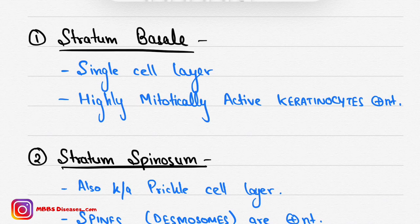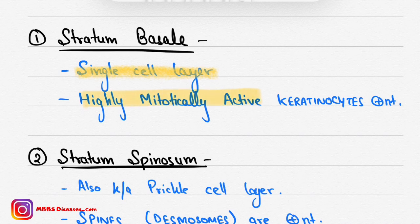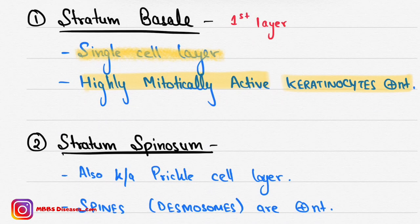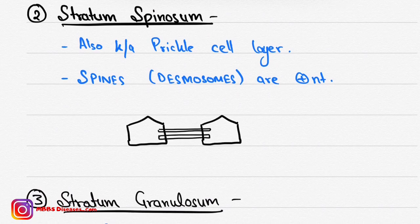The first layer is stratum basale. It is the lowermost layer and is a single cell layer. It is highly mitotically active — keratinocytes present in stratum basale can divide very rapidly. Stratum basale is formed first among all the layers.